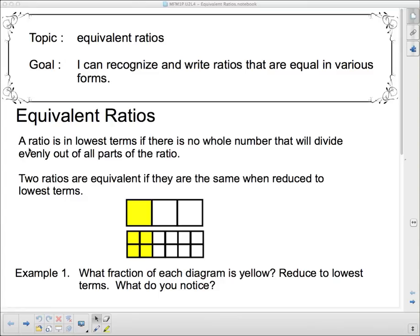Equivalent ratios. A ratio is in lowest terms if there is no whole number that will divide evenly out of all parts of the ratio. Two ratios are equivalent if they are the same when reduced to lowest terms. Now hopefully you can take a look at this thing and see that I've got the same shape here, just divided into smaller pieces.